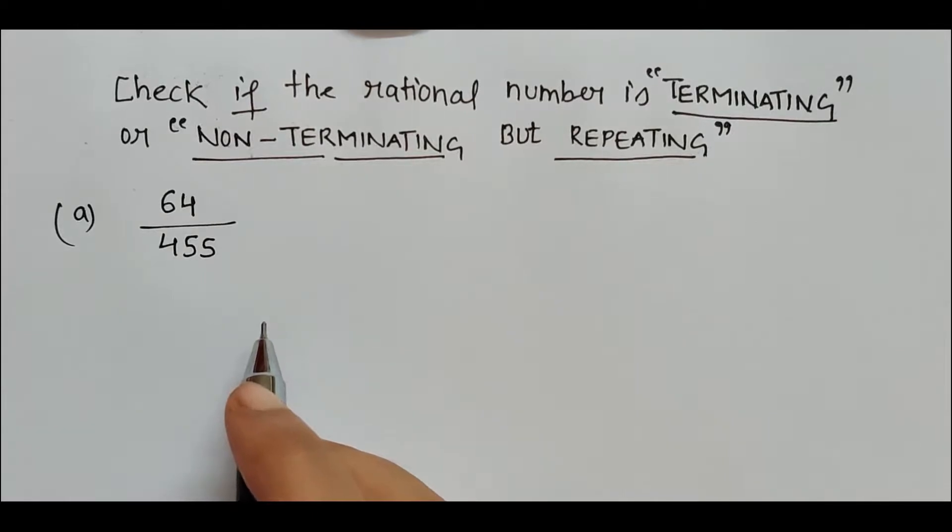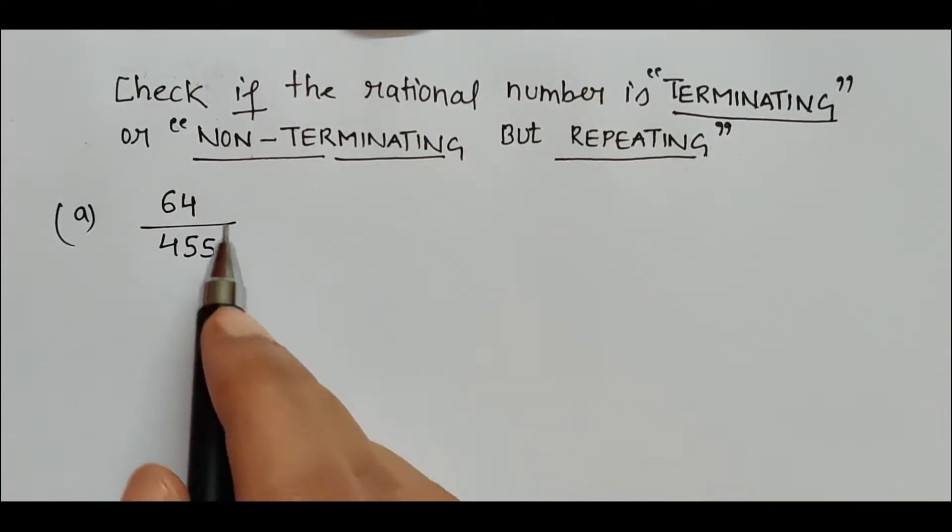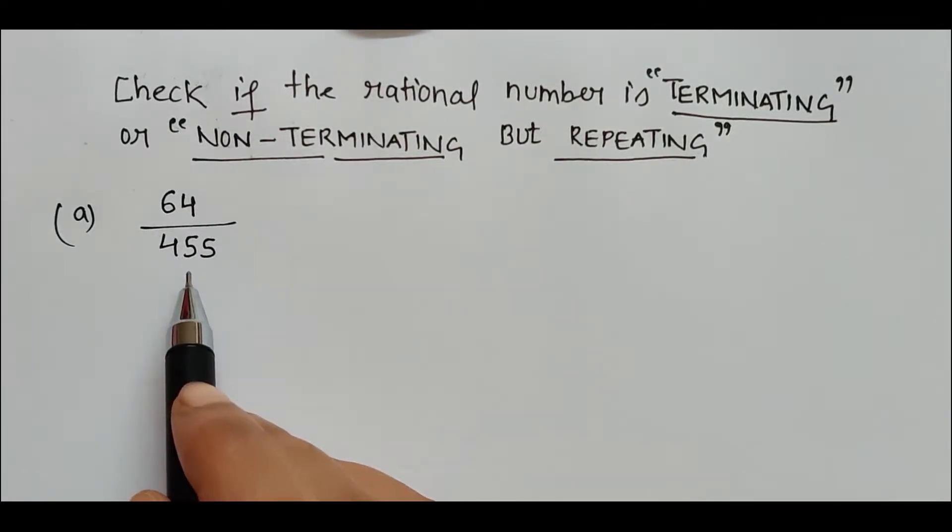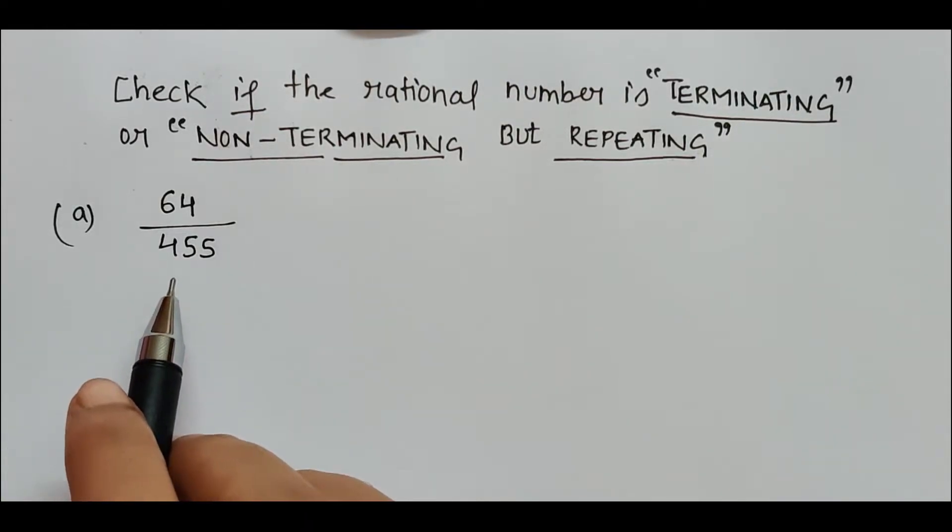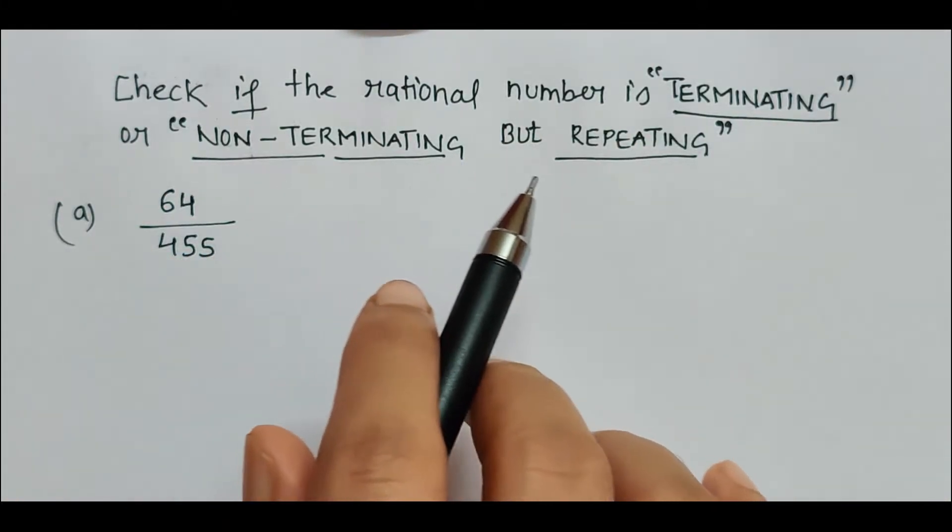The first step is to write down the numerator and denominator in its prime factor form. It is very important because only then the denominator will help us in determining whether it is terminating or non-terminating but repeating.